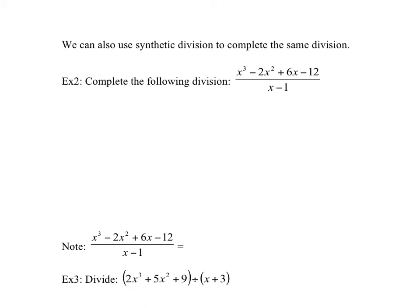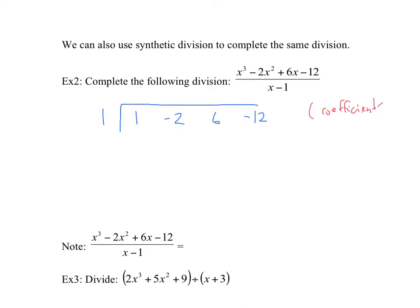There's another way to divide called synthetic division, which uses the same practices but is a bit shorter. We're going to divide the polynomial by the binomial x minus 1. First, find the zero of the denominator: x minus 1 gives x equals 1. Put 1 in a box. Then write all the coefficients and the constant of the polynomial in order.